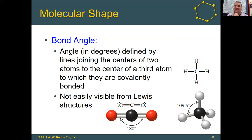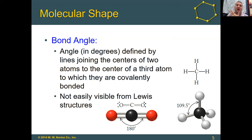You can't necessarily easily see bond angles from Lewis structures. In the case of CO2, they're drawn straight across for a straight line or 180 degrees. But in the case of methane, those hydrogens on paper look like they're at right angles or 90 degrees from each other. In reality, in three dimensions, they are 109.5 degrees apart.